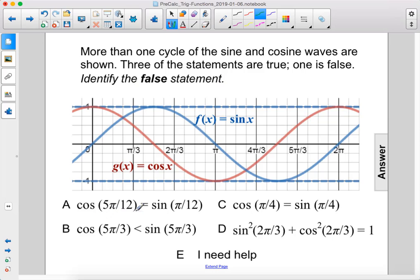Cosine of 5π over 12, so that is right here, equals sine of π over 12. So π over 12 is here, sine is there. They are equal. This is true.